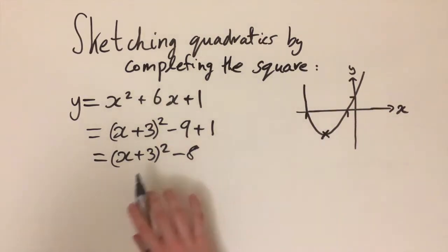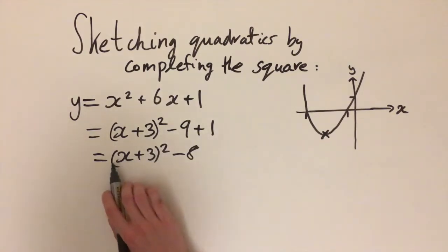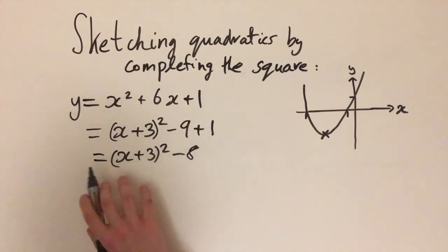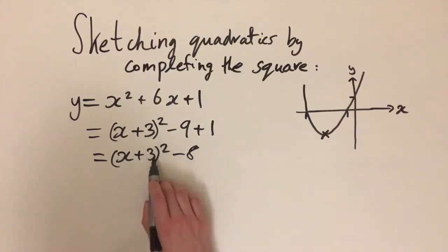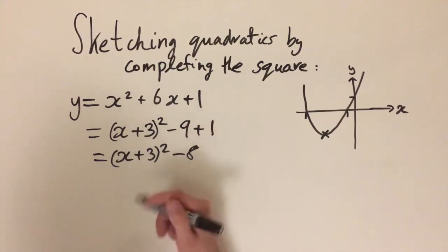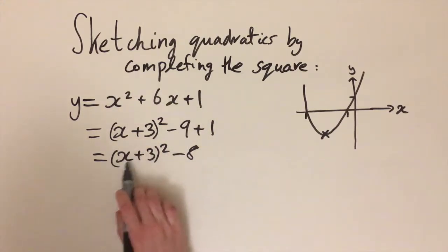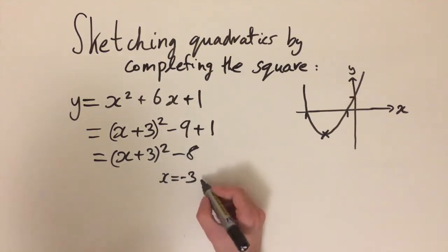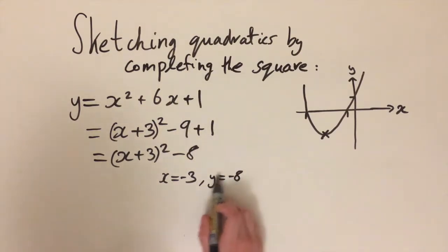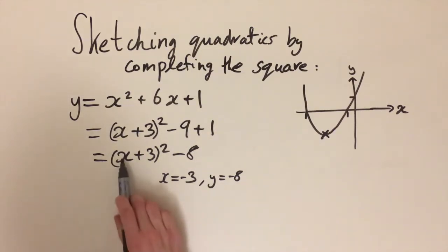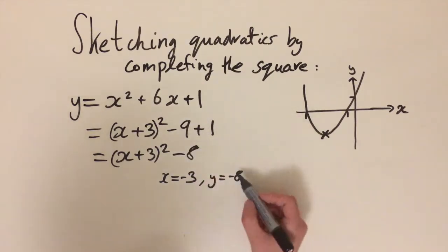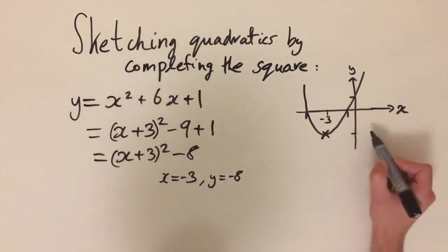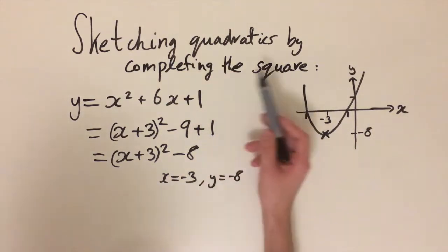The squared term is always positive — whatever the value of x, squaring it gives a non-negative number. So the smallest value this can take is when the bracket equals zero, since that is the smallest non-negative number we can square. Setting (x + 3) = 0 gives x = −3. When x = −3, the squared term is zero and we're left with −8, so y = −8. This is the smallest value y can take, because for any other x we'd be squaring a positive number and adding to the total. So the minimum is at (−3, −8).